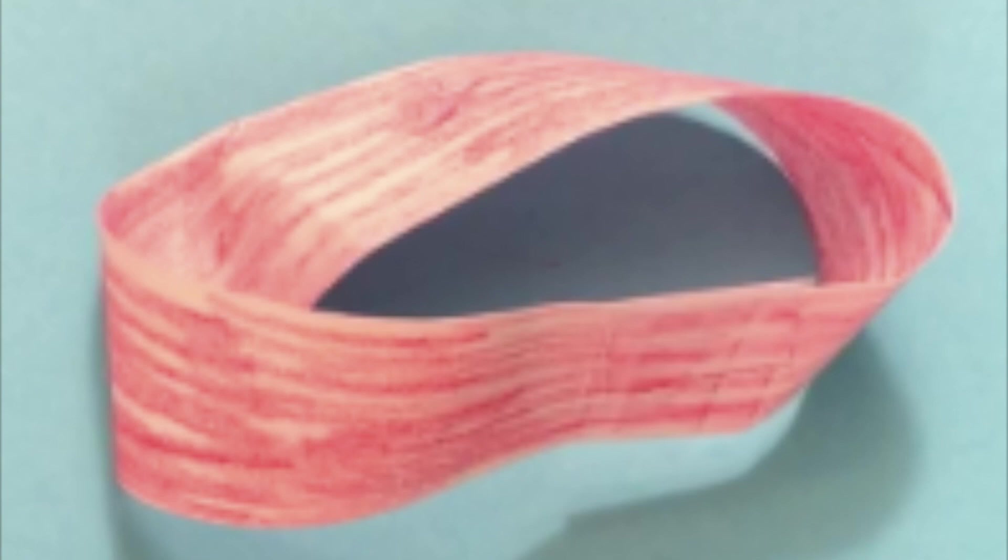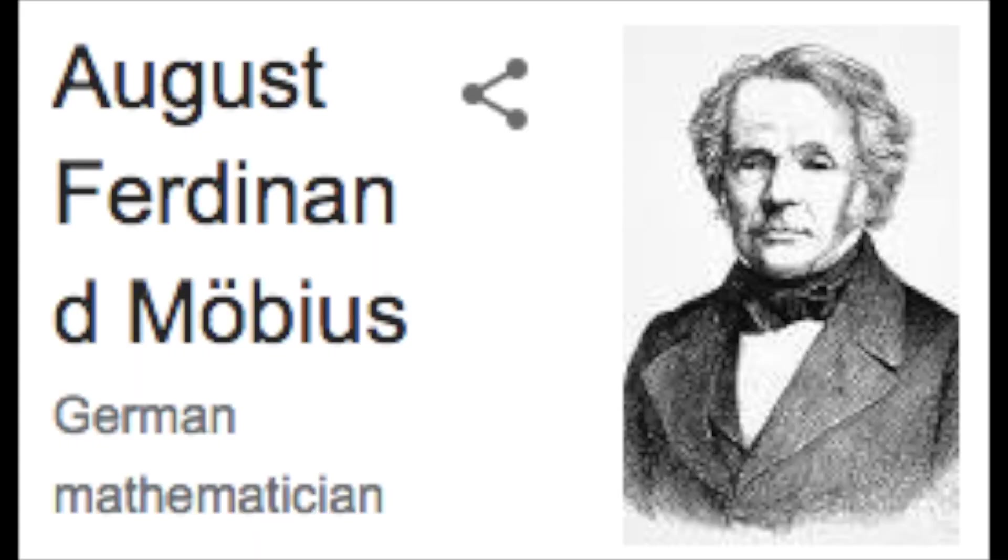This object is called a Mobius strip, named after the 19th century German mathematician August Ferdinand Mobius. The Mobius strip has many other interesting properties. Let's look at a few more of them.